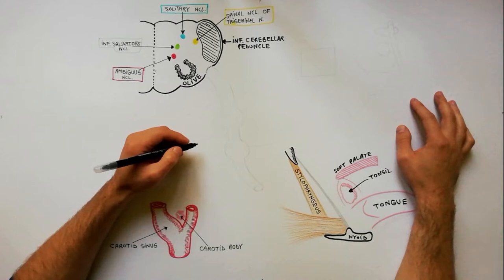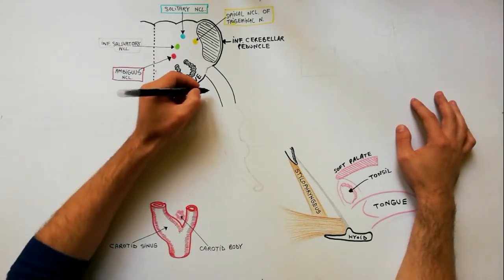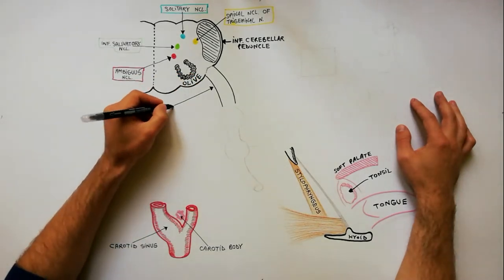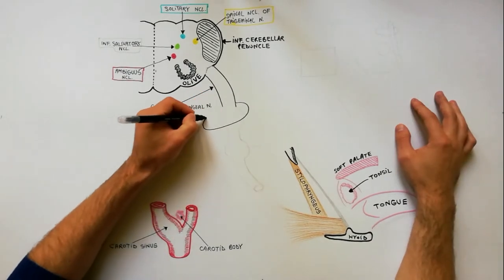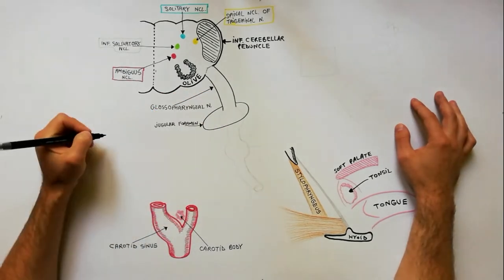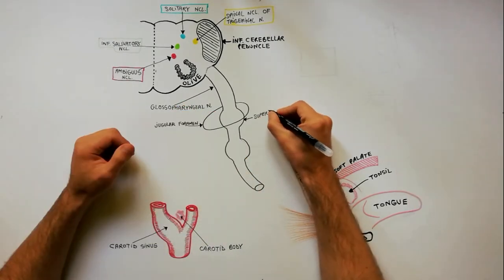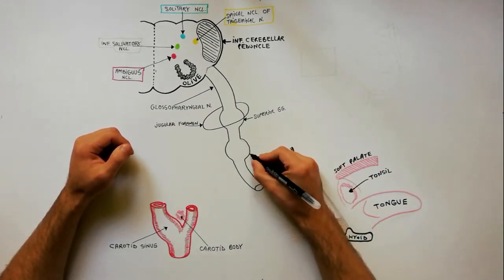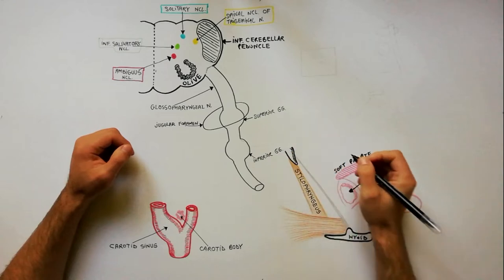The glossopharyngeal nerve arises from the upper part of the lateral aspect of the medulla, between the olive and the inferior cerebellar peduncle. It leaves the skull by way of the jugular foramen. Two ganglia are located on the nerve: the superior ganglion, which lies within the jugular foramen, and the inferior ganglion, which lies just below the jugular foramen.